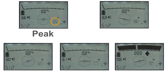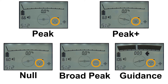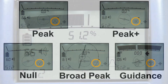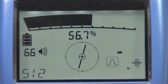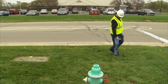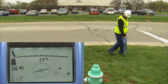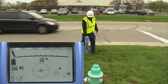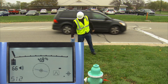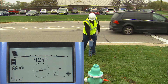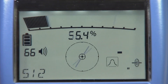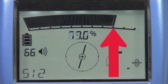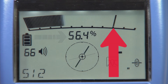Each mode has its own icon that is displayed on the screen when used. Peak mode is popular with operators as they appreciate the simplicity of the display. The bar graph is at its maximum when you are directly over the target line. The further away from the target line you are locating, the less of the bar graph will be filled. The tide mark on screen shows you where the peak signal was found.